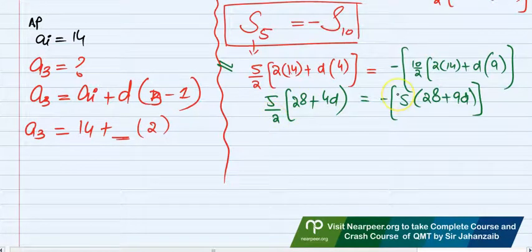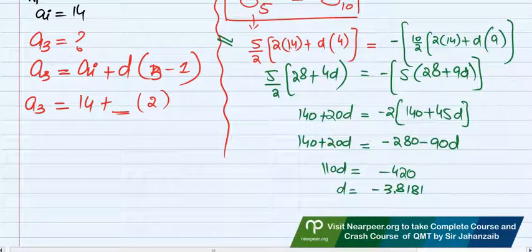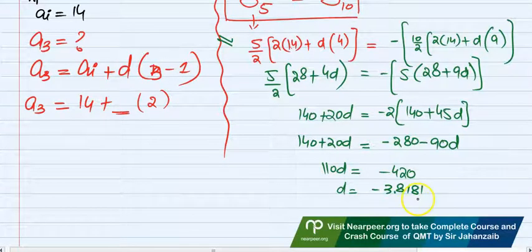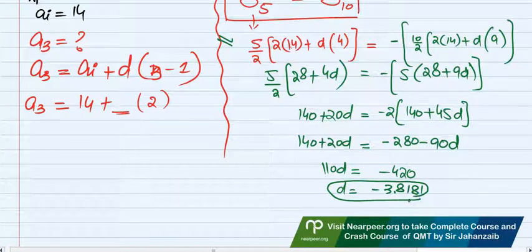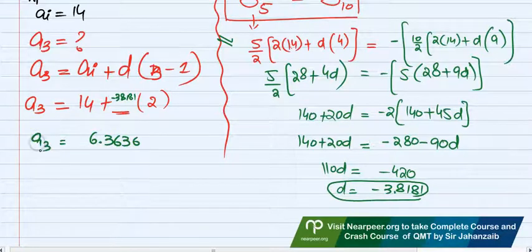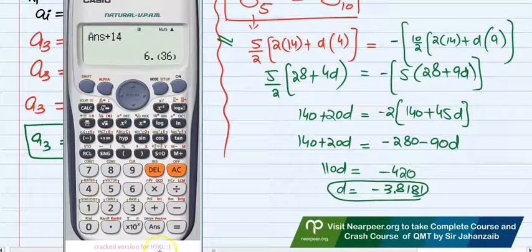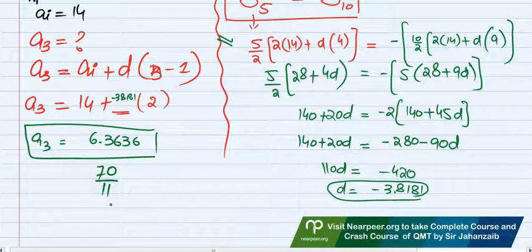When you solve this and find common difference, common difference is minus 3.8181. Now put this in the formula to get the answer 6.3636. So third term is 6.3636, which equals 70 divided by 11. This is how you calculate this answer. We conclude this video here. We will see more questions in the next video. Thank you very much.